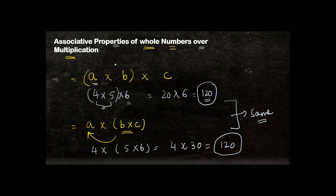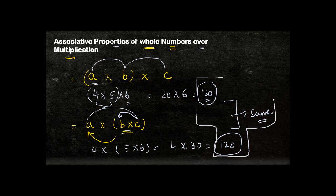So we say that whole numbers are associative over multiplication. In any given set of whole numbers, you may multiply the first two together and then multiply by the third, or multiply the second and third first and then multiply by the first — in all cases the answer will always be the same when dealing with whole numbers.